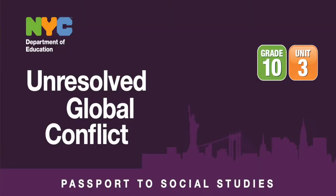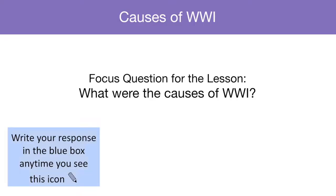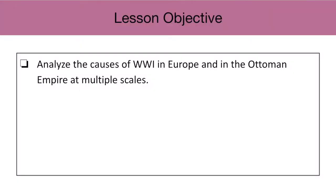In this video I'm going to focus on the 10th grade Passport to Social Studies curriculum Unit 3 Mini Unit A: Unresolved Global Conflict 1914 to 1945, World War I and World War II. The lesson we're looking at is Day 2: Causes of World War I. The focus question is: what were the causes of World War I? Our objective is to analyze the causes of World War I in Europe and in the Ottoman Empire at multiple scales.